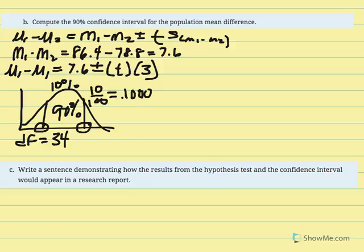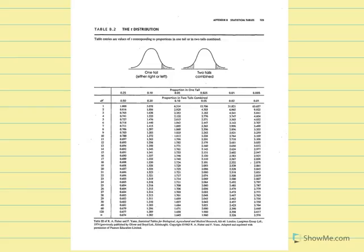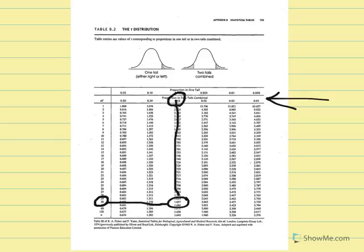The center of this confidence interval calculation is the sample statistic mean difference of 7.6. If we had access to both populations, 90% of the time the sample mean difference would fall within 2.509 to 12.691. Importantly, does this range include the null value of zero? No — zero would be off to the left, not included in this range.